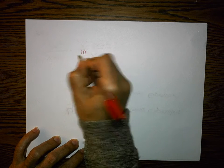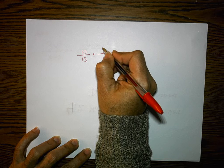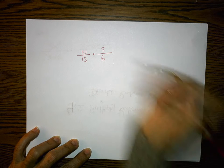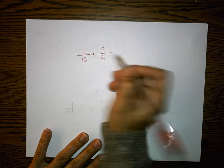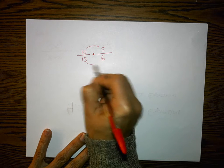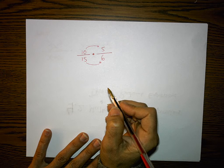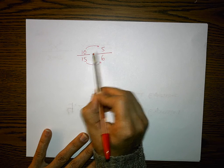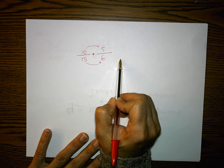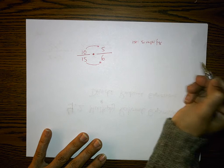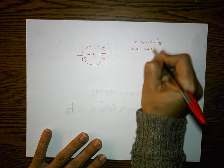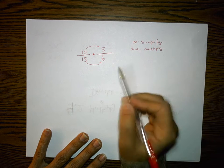Before going into an example, when we want to multiply fractions, we reduce those fractions first. If I wanted to multiply 10/15 times 5/6, multiplication of fractions means we multiply straight across — 10 times 5 and 15 times 6. But why multiply to get a big number if I can simplify first? So first, simplify; second, multiply.